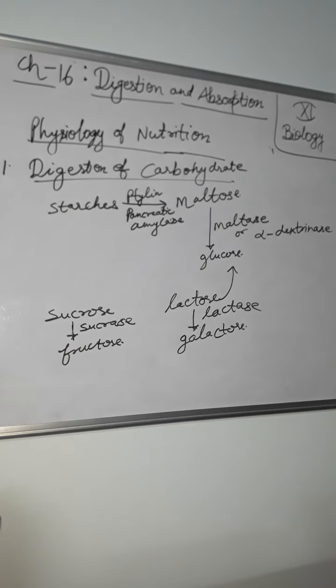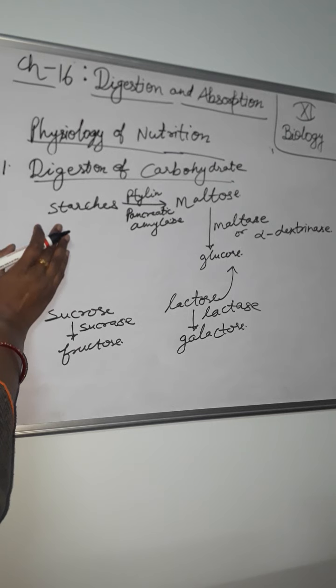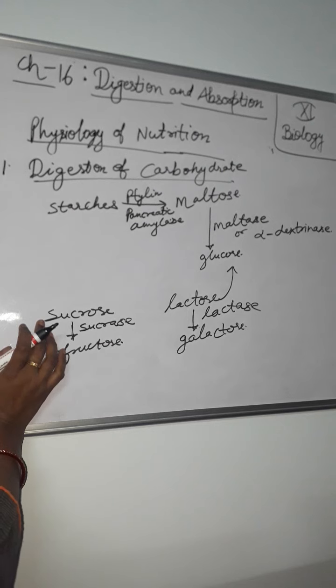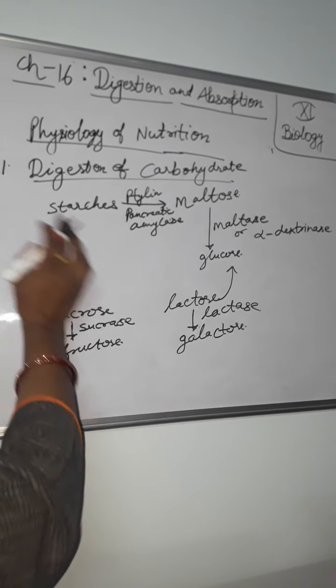Now see, it is a summary of this digestion of carbohydrate. Most of our food is a complicated chemical structure. Three major sources of carbohydrate in the human diet are sucrose, that is cane sugar, second one is lactose, that is milk sugar, and third one is starch.